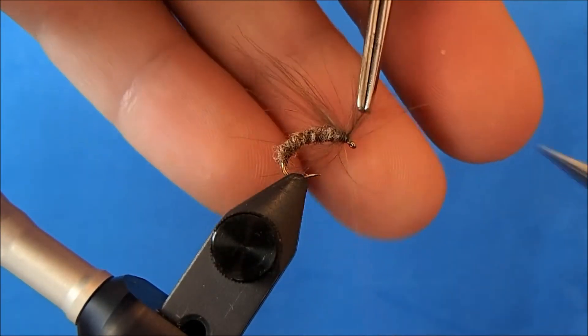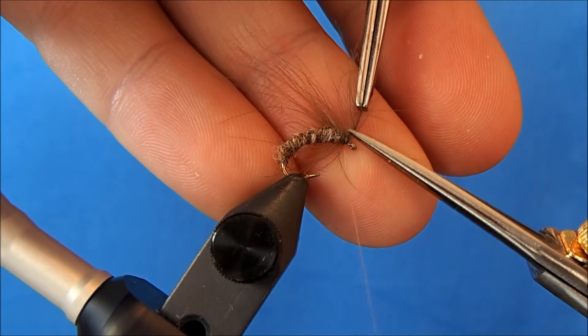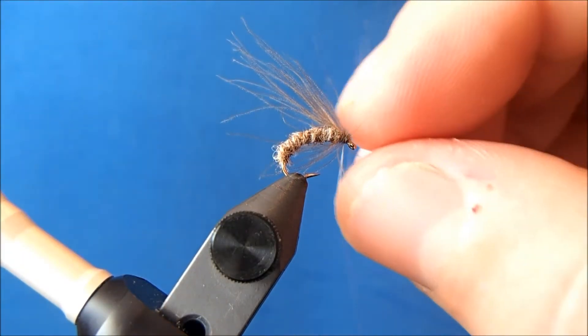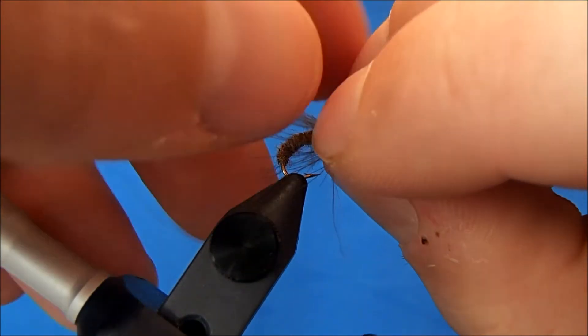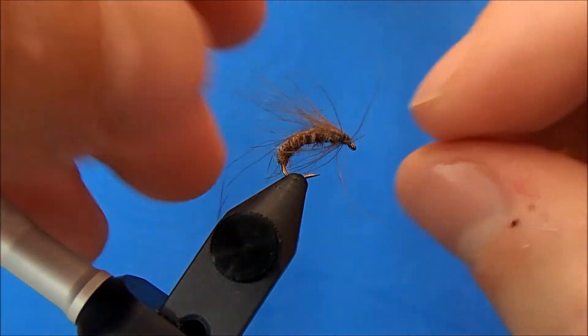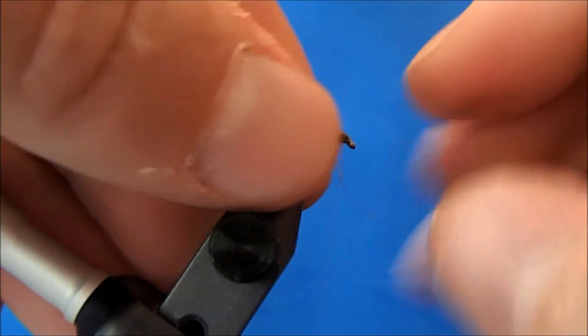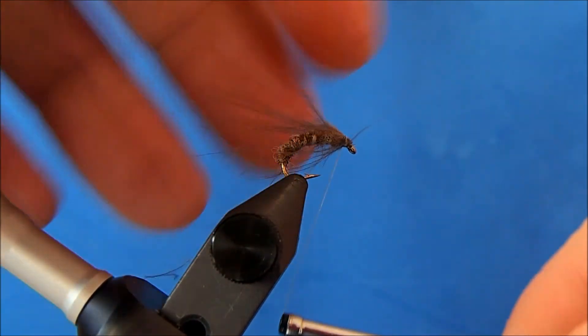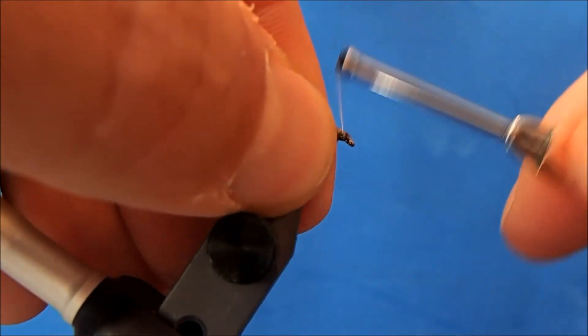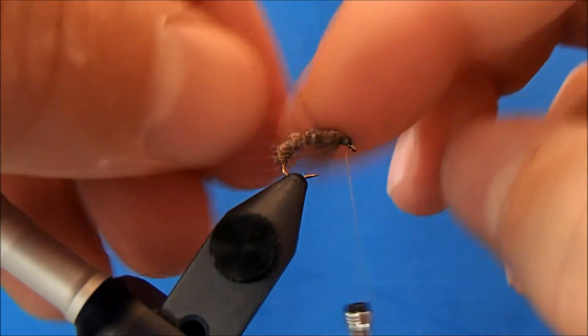You can trim that tip. And now I try to position the CDC so that it's on either side. So I'll pull those back and then take my wraps back over it to help keep them in place.